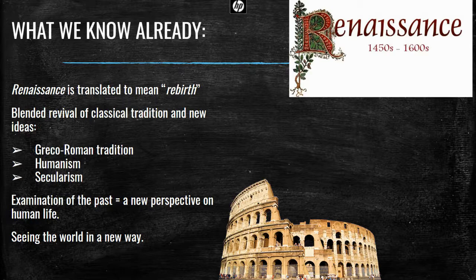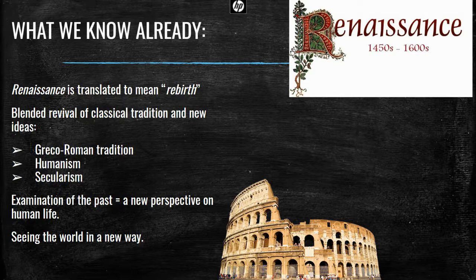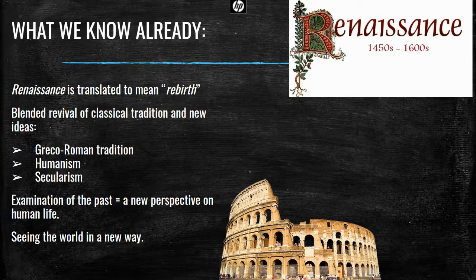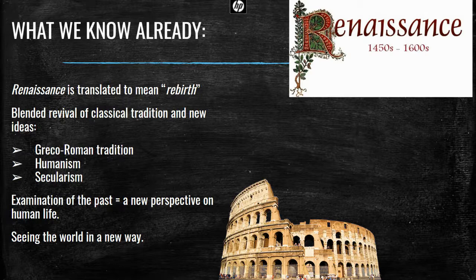This is all born out of the Humanism movement. Humanism was a movement that focused on the potential of the human being to reach full potential through learning and education. There was also secularism — a focus on worldly things, on the here and now. During the Middle Ages, people tended to focus on salvation and what was going to happen to them after they died. During the Renaissance era, people were more focused on the here and now and trying to make this world a better place, which is closely tied to humanism, education, and learning. So when we think about the Renaissance, think about it as an examination of the past with a new perspective on human life — it's seeing the world in a different way.